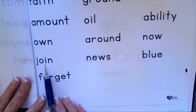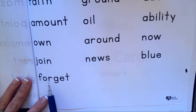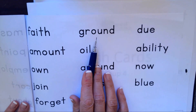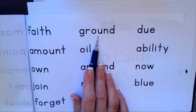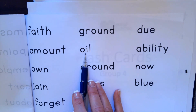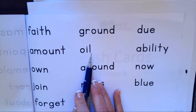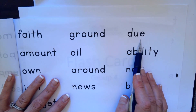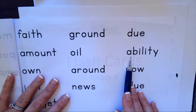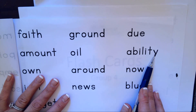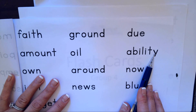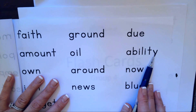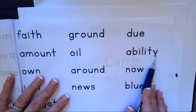O-I makes oi, J-O-I-N, join. O-R makes or, F-O-R-G-E-T, forget. O-U makes ow, G-R-O-U-N-D, ground. O-I makes oi, O-I-L, oil. U-E makes o, D-U-E, due. Y makes e, i, or ya — so I'm going to try all three ways: ability. Y makes e here, A-B-I-L-I-T-Y, ability.